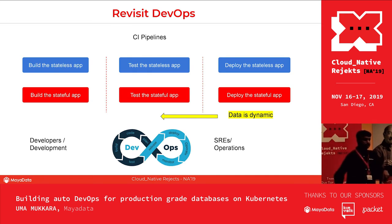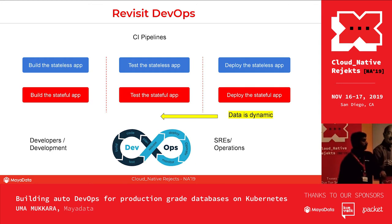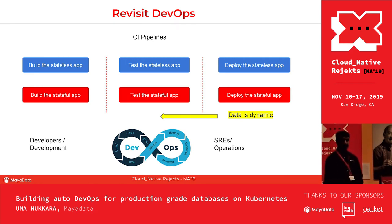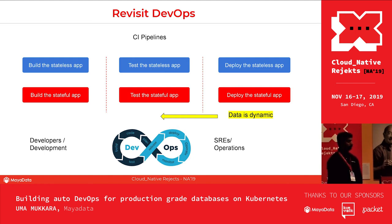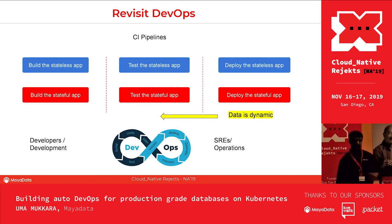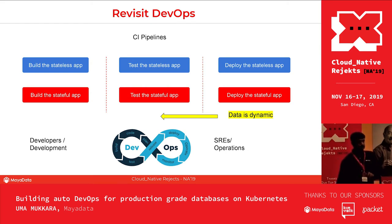Let's revisit the famous DevOps cycle. On the left side you have developers doing development; on the other side, operations and SREs. For stateless applications, it's pretty common — you build the app, test it through pipelines, and deploy it. But when it comes to stateful applications, it's not the same. The primary difference is the data itself. The data is dynamic; as you run stateful applications in production, the continuous thing that changes is the data. You want to bring that data back into the CI pipeline so you're running on real or near-real data.